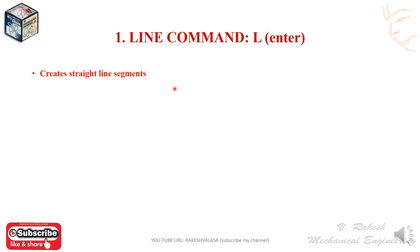The line command can be used to draw a single line or a series of lines, with the endpoint of one being the start point of the next. When a series of such lines is created, each line is treated as a separate entity. To create a closed polygon, the user has to type C in the command prompt.